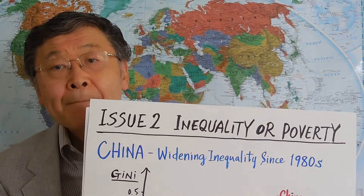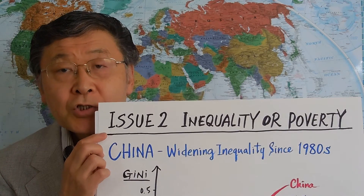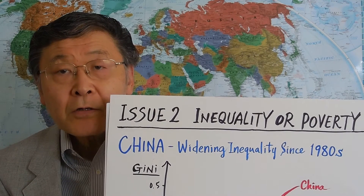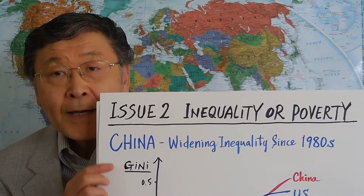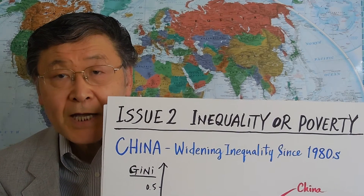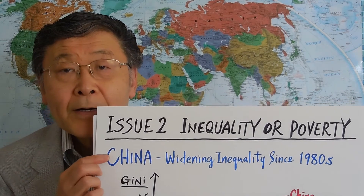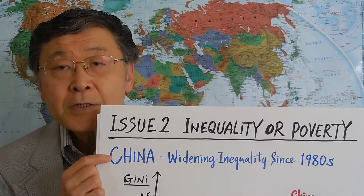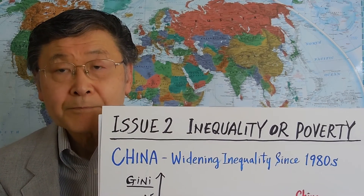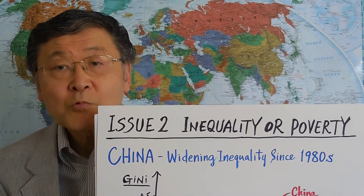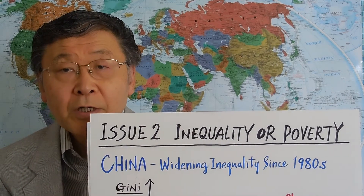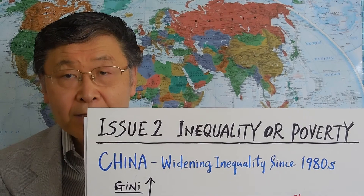Today, we will talk about inequality and poverty, especially in China. In the area of relative inequality, China seems to be a problem. China is having a problem of widening inequality, especially since the 1980s.